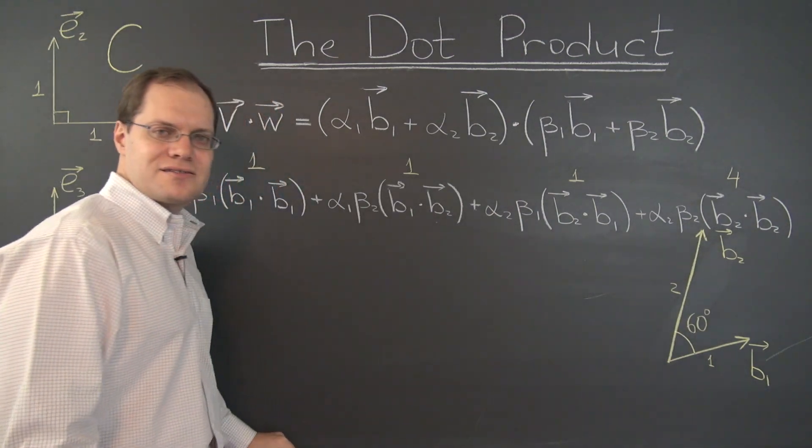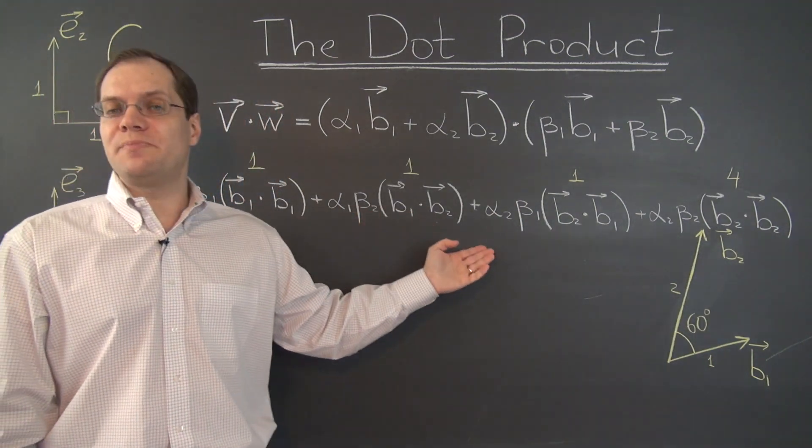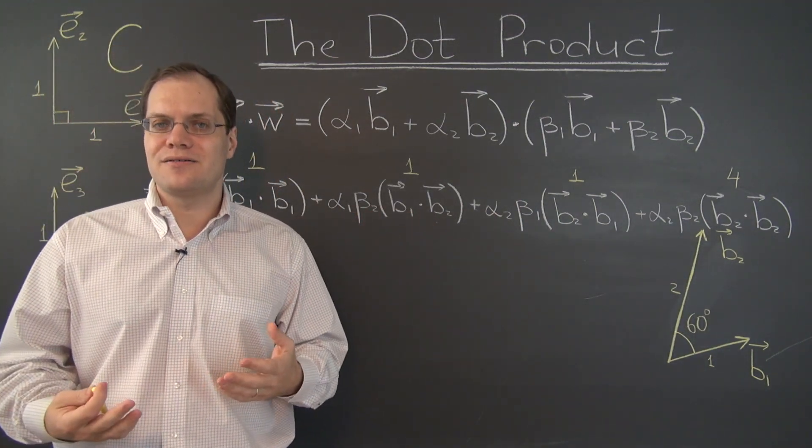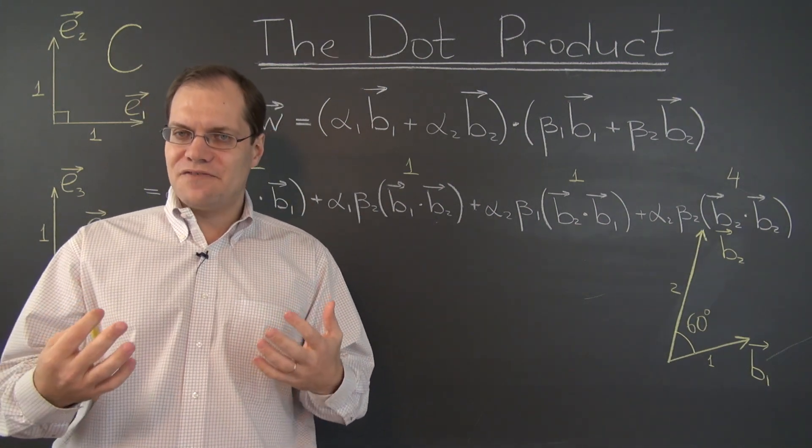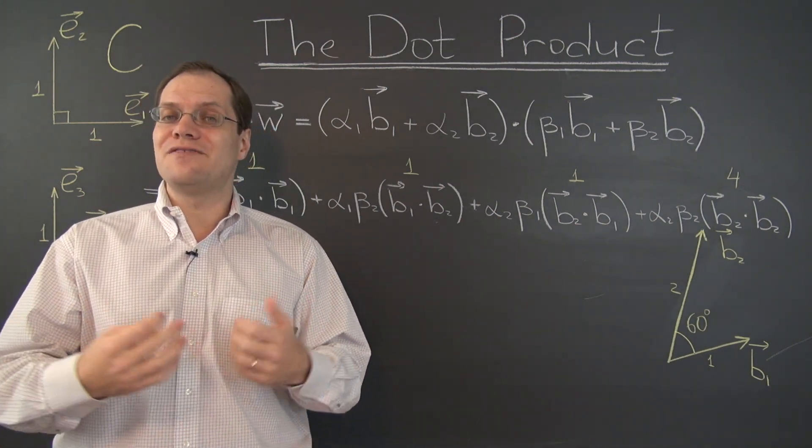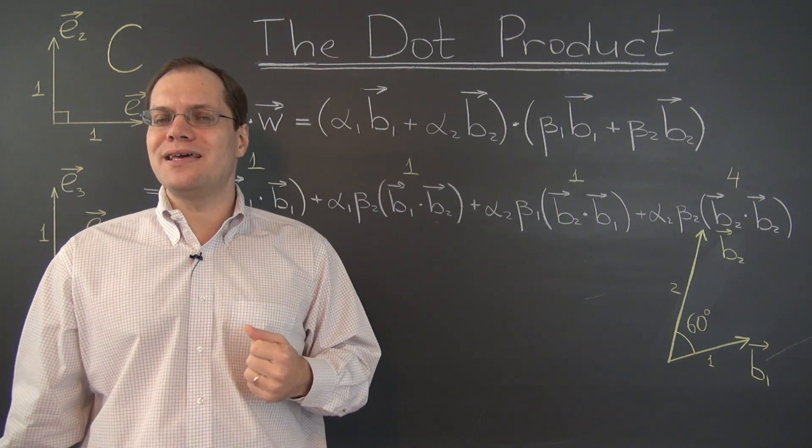So for this specific basis, we now have its corresponding formula for the dot product. It's not as simple as alpha 1 beta 1 plus alpha 2 beta 2. But it's not much more complicated.